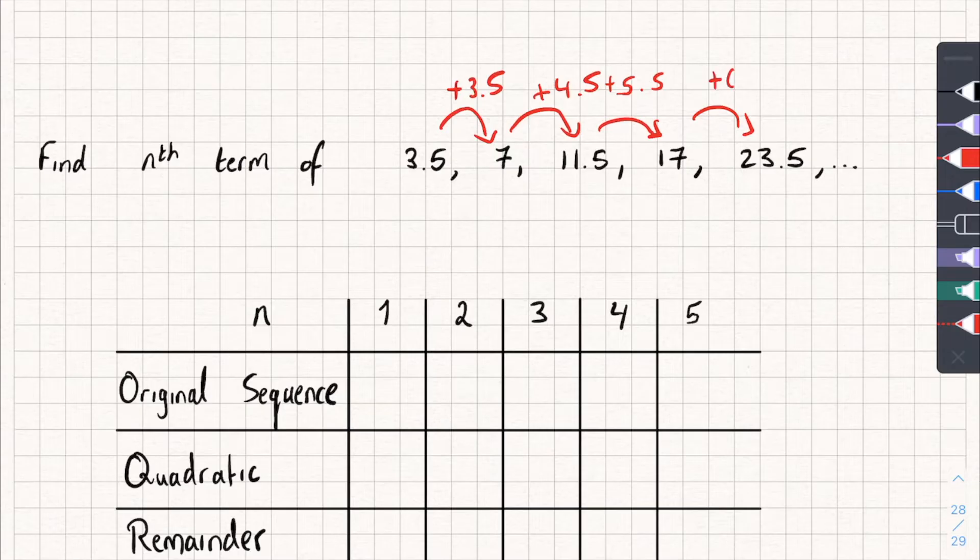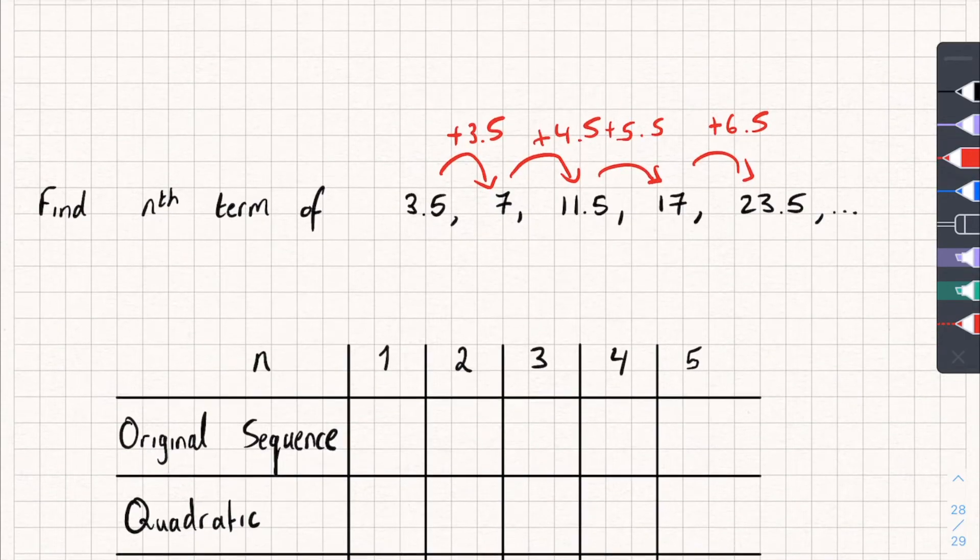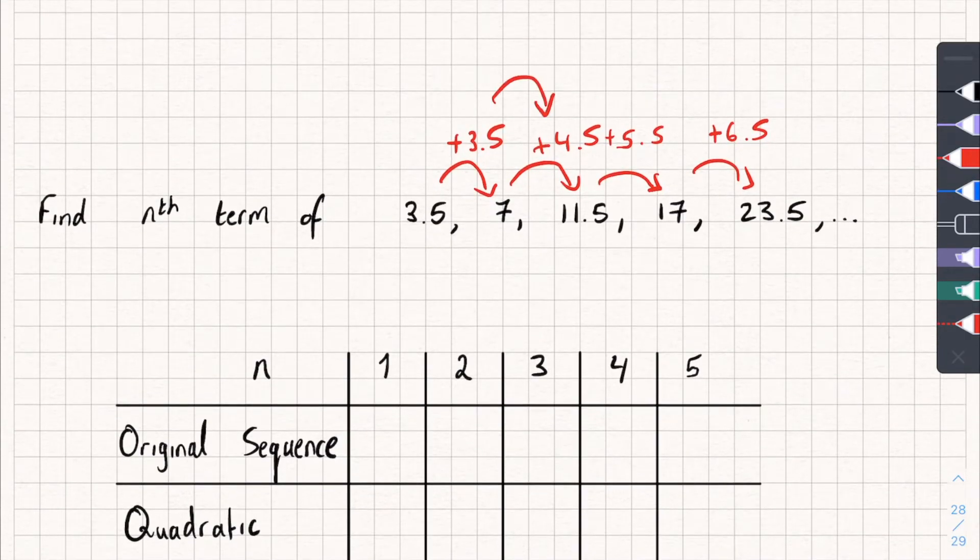So, you can see that's our first difference. And they're all different. So, let's look at the second difference. So, in this one, we're going plus 1. Here, we're going plus 1. And here, we're going plus 1. Now, remember what I said. We look at our second difference. In this case, they're all plus 1s.